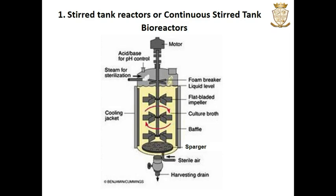Coming to the first type, it is a stirred tank reactor or continuous stirred tank reactor, also known as CSTR. This is a cylindrical vessel with a motor-driven central shaft. We can see several agitators or impellers attached onto the central shaft. The rotational motion of the motor maintains a uniform condition throughout the culture media and microorganisms present inside the fermenter. There are baffles — plates fitted to the interior side of the vessel wall. There are generally four to six baffles in each fermenter.